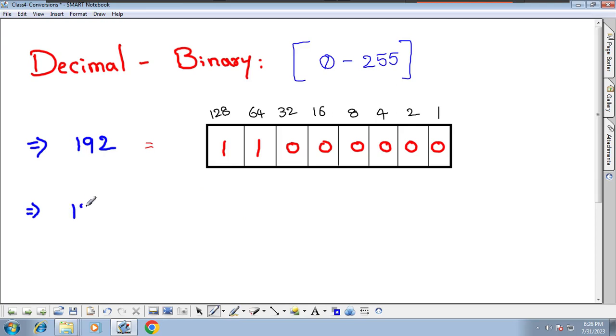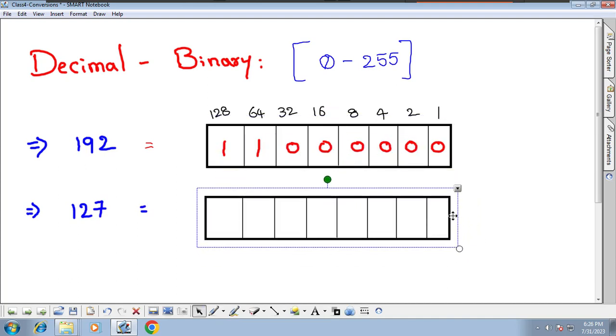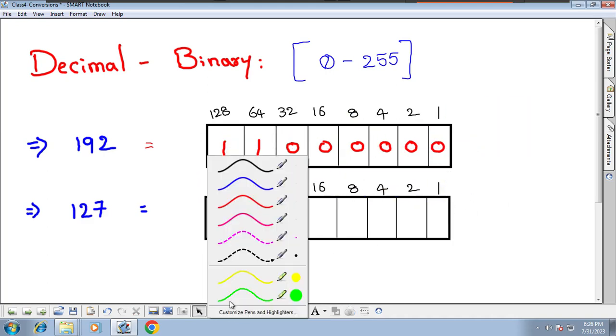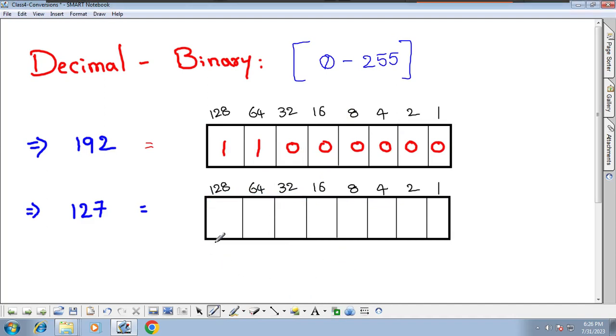Now you are thinking, you have taken a very easy number. That is very easy, anybody can do that. Yes, obviously. Let's take 127 - this is a little bit difficult. Let's take this same box, keep the place values here. Now I cannot put 1 here, because my given value is 127 only. The place value is 128.